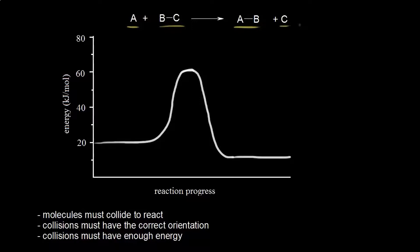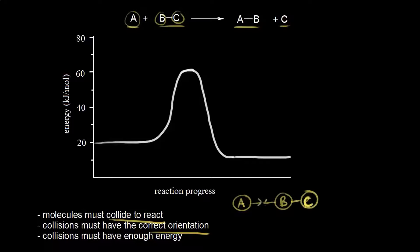To think about collision theory, consider the reaction where atom A reacts with a diatomic molecule BC to form a new diatomic molecule AB and C. According to collision theory, molecules must collide to react, so atom A has to collide with molecule BC. The collisions must also have the correct orientation in space. For this reaction, molecule BC must approach A in the proper orientation — since we're forming a bond between A and B.